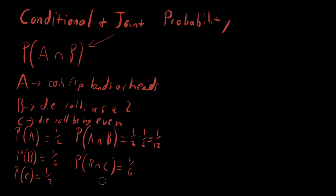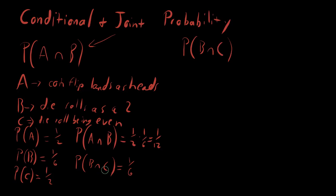Now let's ask a different question. Let's ask for the probability of two events occurring, but knowing that one of the events already occurred. What's the probability of B and C occurring — rolling a two and the die being even — but we know that C occurred, that the die roll was even. We're dividing the joint probability by the probability that the die roll was even, since I'm telling you that this occurred.